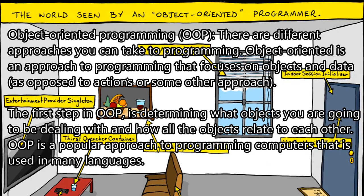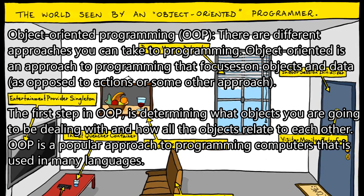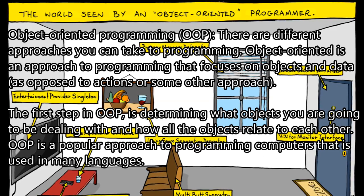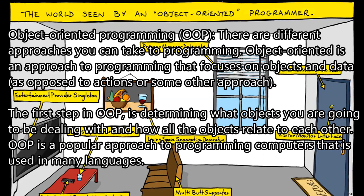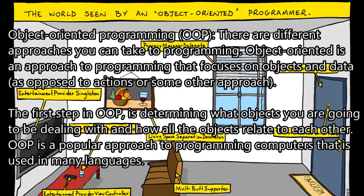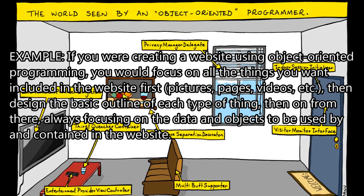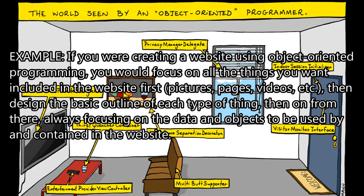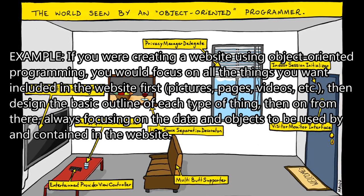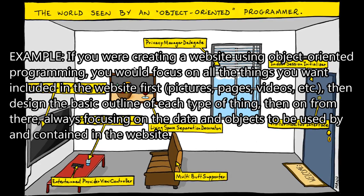Object-oriented programming (OOP) — there are different approaches you can take to programming. Object-oriented is an approach that focuses on objects and data as opposed to actions or other approaches. The first step in OOP is determining what objects you are going to be dealing with and how all the objects relate to each other. OOP is a popular approach used in many languages. For example, if creating a website using OOP, you would focus on all the things you want included — pictures, pages, videos, etc. — then design the basic outline of each type of thing, always focusing on the data and objects.